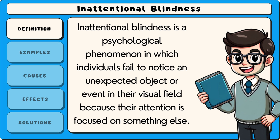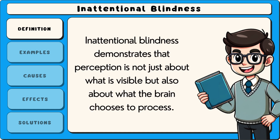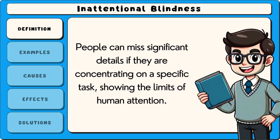Inattentional blindness is a psychological phenomenon in which individuals fail to notice an unexpected object or event in their visual field because their attention is focused on something else. This occurs even when the object is in plain sight and should be easily detectable. Inattentional blindness demonstrates that perception is not just about what is visible but also about what the brain chooses to process. People can miss significant details if they are concentrating on a specific task, showing the limits of human attention.